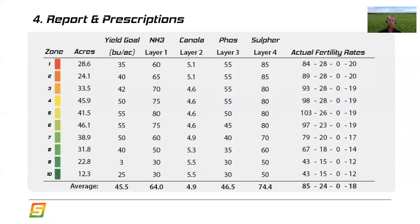Once the soil sample results are back, the agronomist can sit down and work through a plan with the farmer and come up with the best rates to be applied in each zone. Variable rate seed is commonly used as well, because response to plant population is also determined by soil, water, and topography factors, similar to fertilizer. This prescription here represents an air seeding unit with four different tanks: one with anhydrous ammonia, one with canola seed, one with phosphate, and one with sulfur — so they can variable rate four different products.